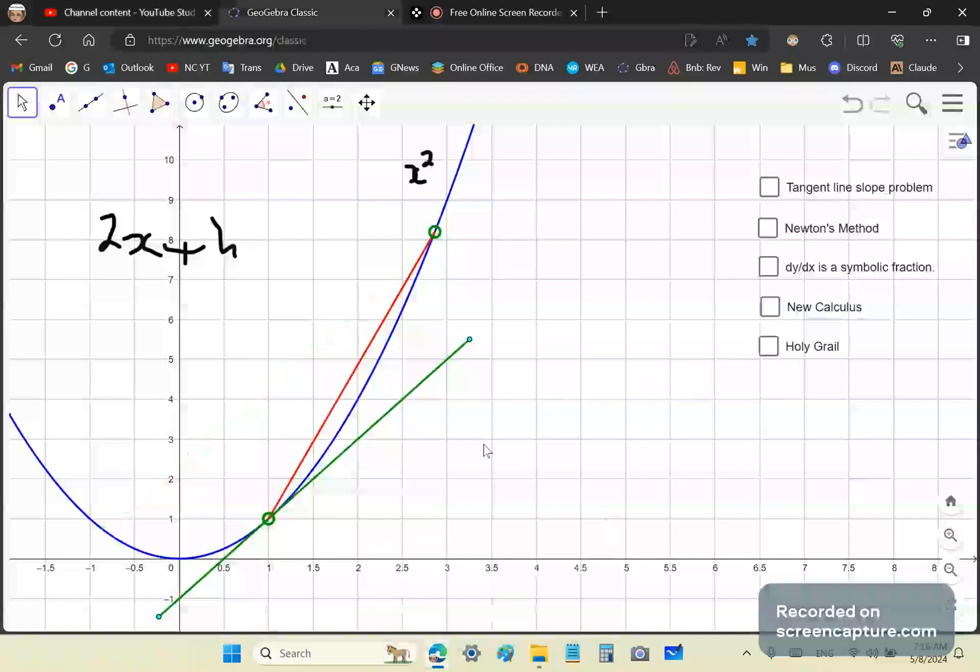The onus is on you to prove that I'm either wrong or right. So I challenge you, prove it to yourself. Go ahead, question everything that I've told you, because that's the way, the only way you'll understand. So I'm not telling you to believe me. I hate that word belief. It doesn't belong in mathematics.